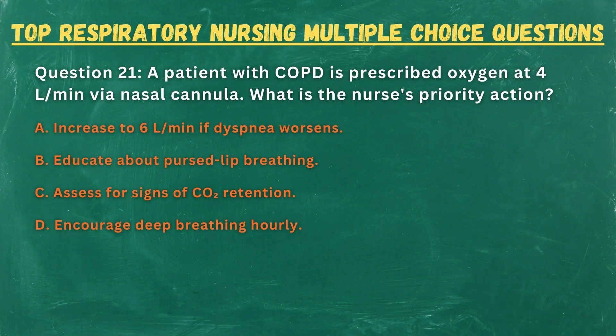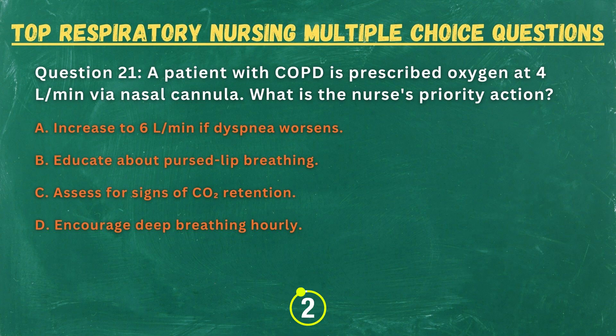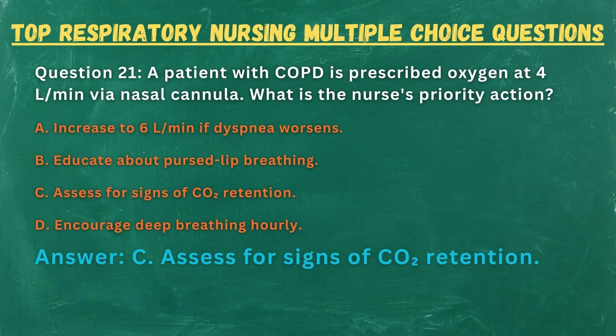Question 21. A patient with COPD is prescribed oxygen at 4 liters per minute via nasal cannula. What is the nurse's priority action? A. Increase to 6 liters per minute if dyspnea worsens. B. Educate about pursed lip breathing. C. Assess for signs of CO2 retention. D. Encourage deep breathing hourly. Answer: C. Assess for signs of CO2 retention.